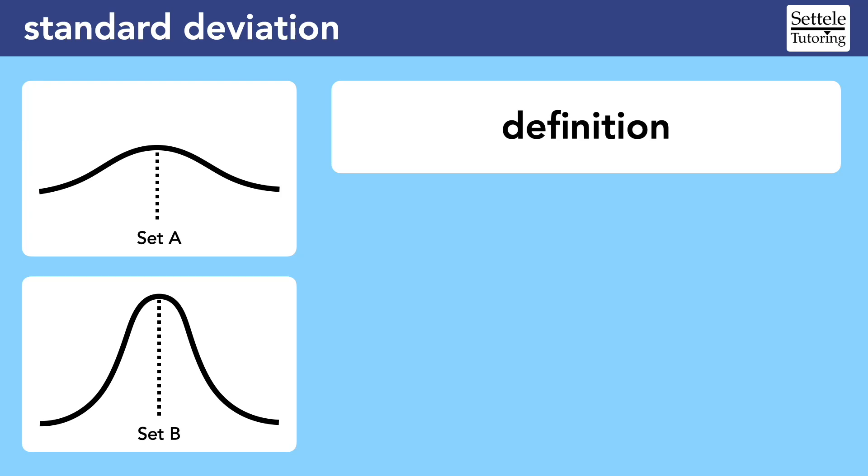Standard deviation is a tricky concept on the SAT for two main reasons. First, most students who take the SAT have not yet learned about standard deviation in their math class at school, so they haven't built up a strong habit for how to think about it. This leads to the second problem, which is that standard deviation is a bit counterintuitive, so it's easy to remember it incorrectly.